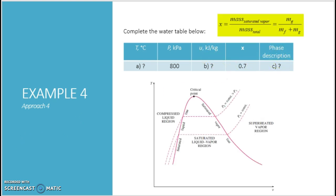So what is the meaning of X? So from your notes, X is actually saturated vapor mass over the total mass. Where you have mass in the form of gas over mass in the form of liquid plus gas.